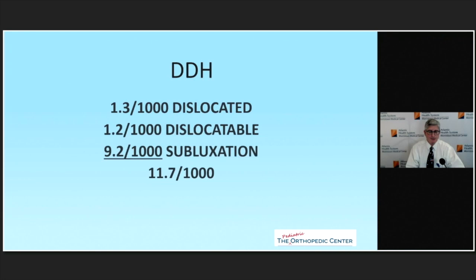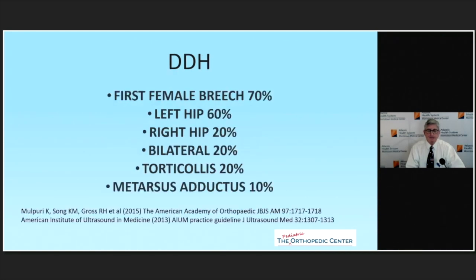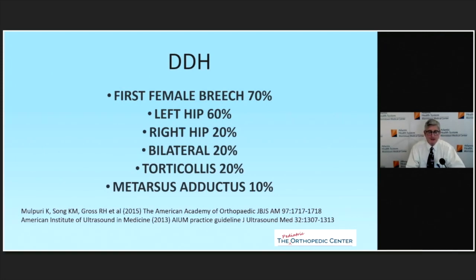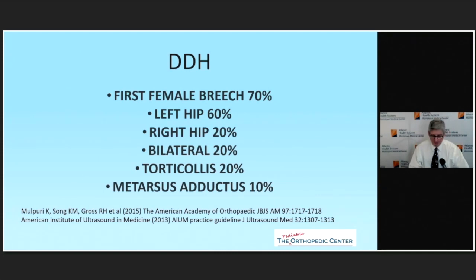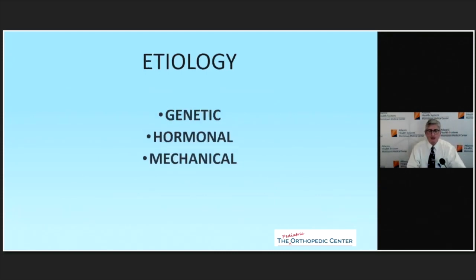The most common history you hear is firstborn, female, breech presentation. It's more common on the left side than the right and bilateral 20% of the time. Torticollis is present in about 20% of patients, and metatarsus adductus in about 10%. Anytime you see a child with metatarsus adductus, you always have to think of hip dysplasia.